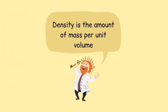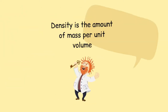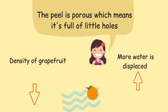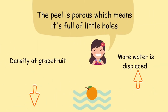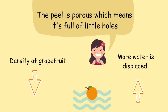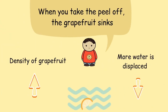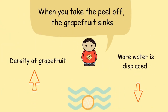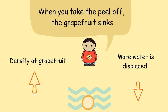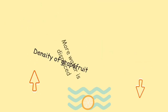Density is the amount of mass per unit volume. The unpeeled grapefruit floats because the rind is very porous and filled with lots of tiny pockets of air. This makes the grapefruit less dense and displaces more water, which makes the unpeeled grapefruit float. When you remove the peel, the grapefruit doesn't displace enough water, it becomes more dense, and sinks.